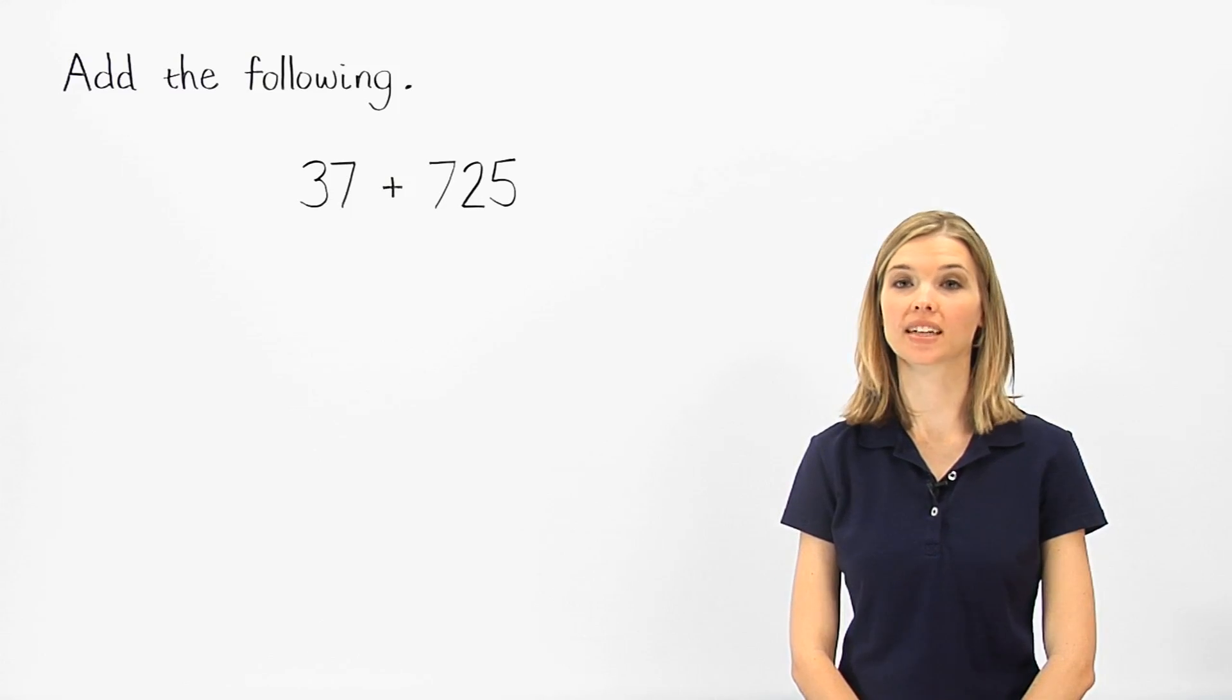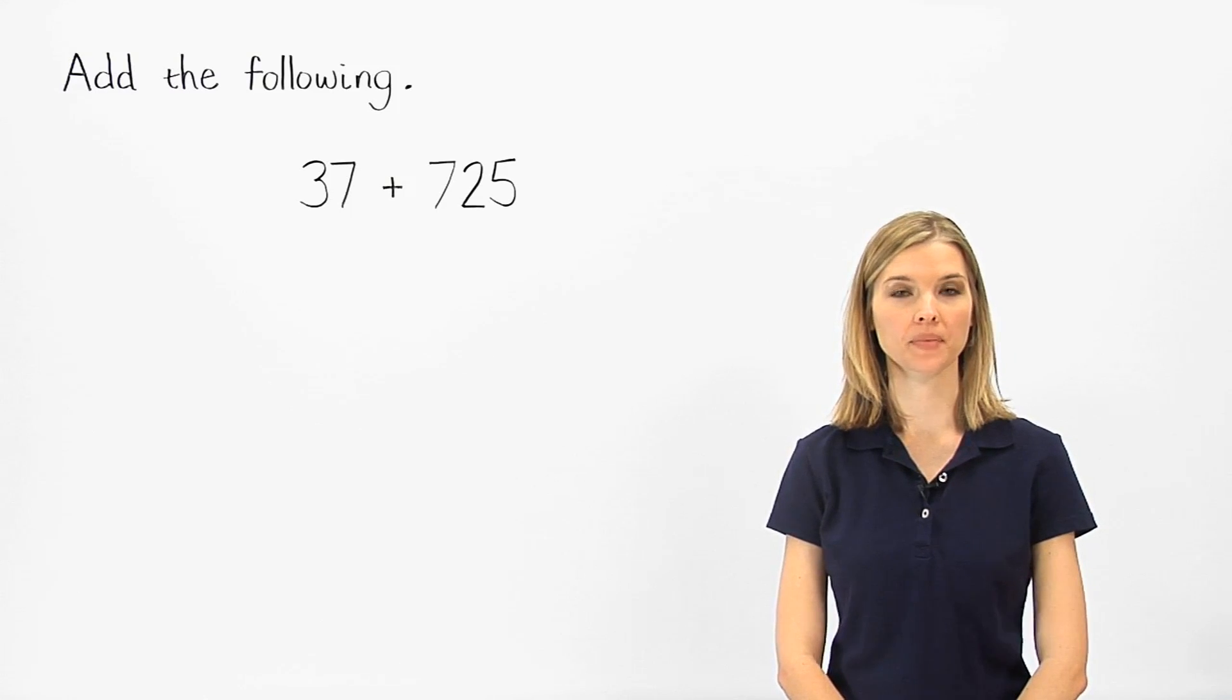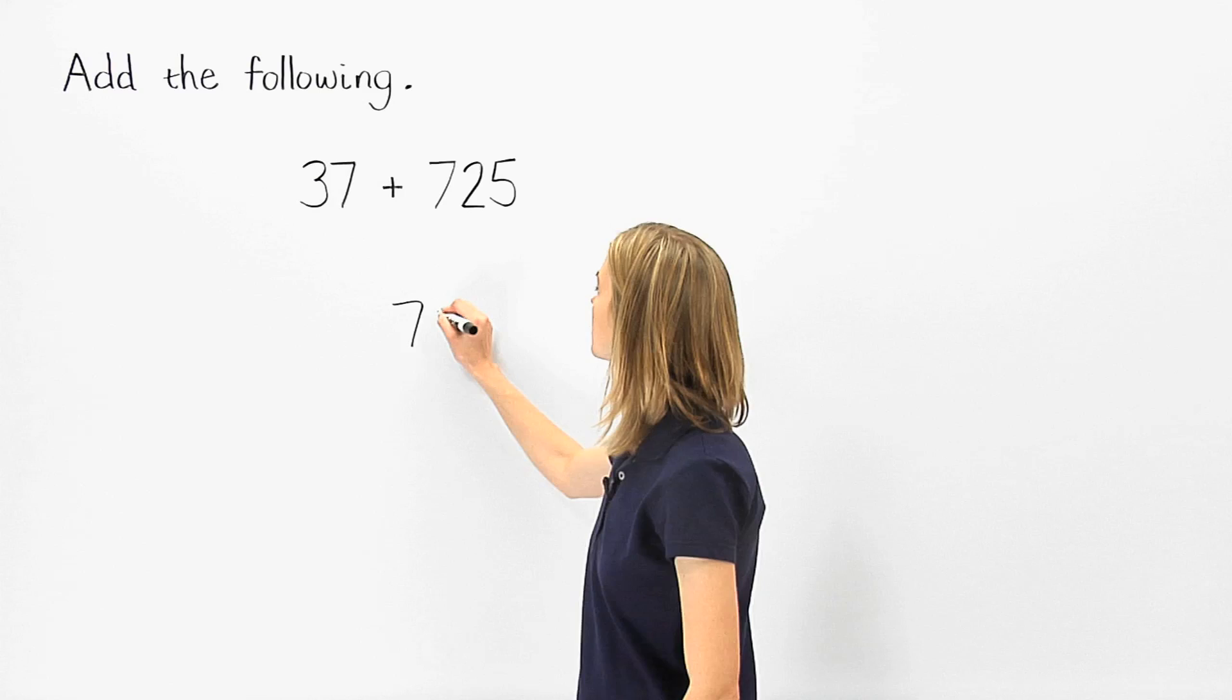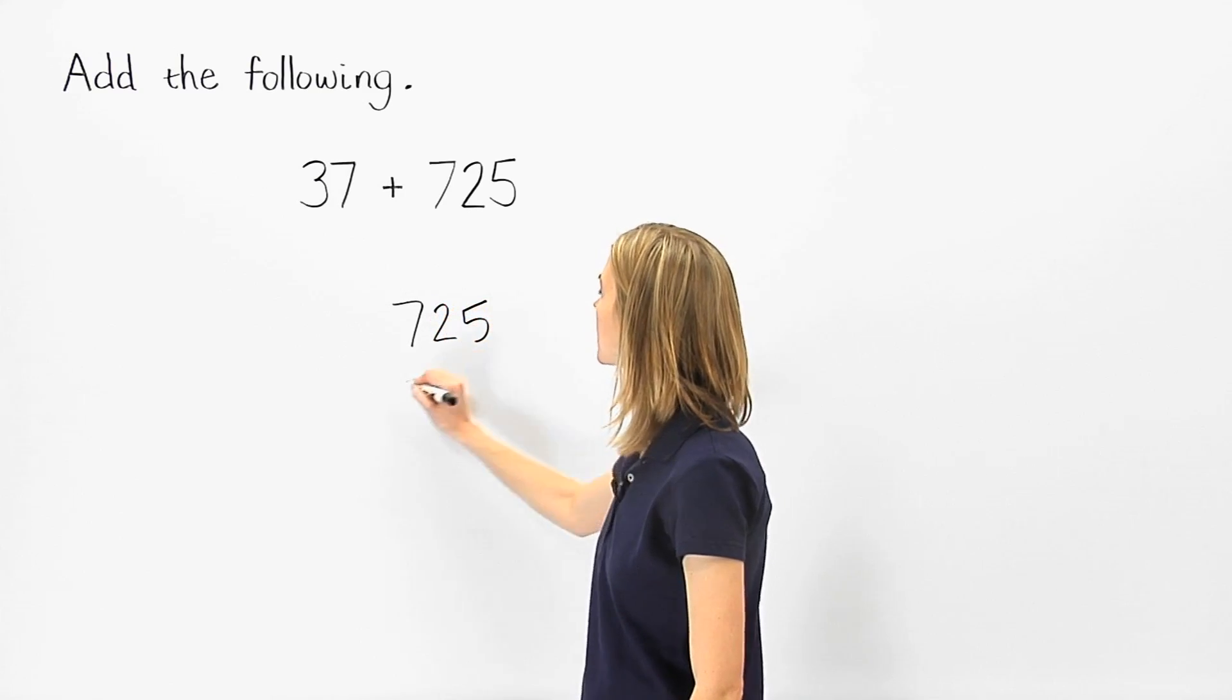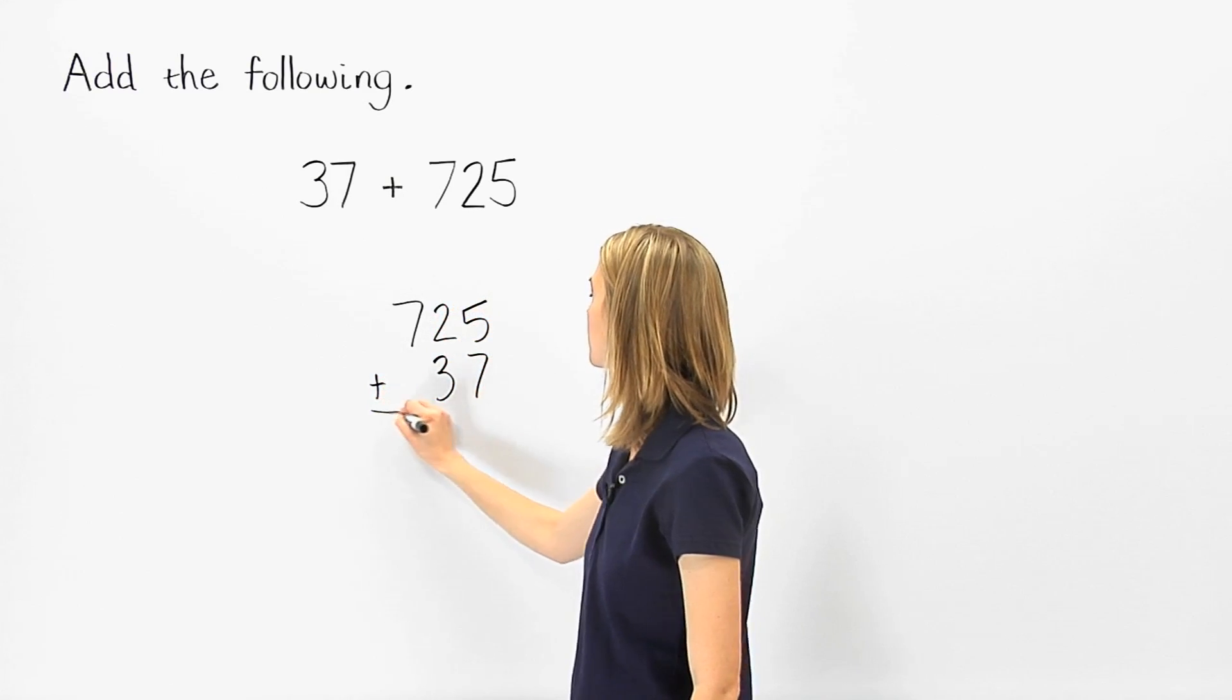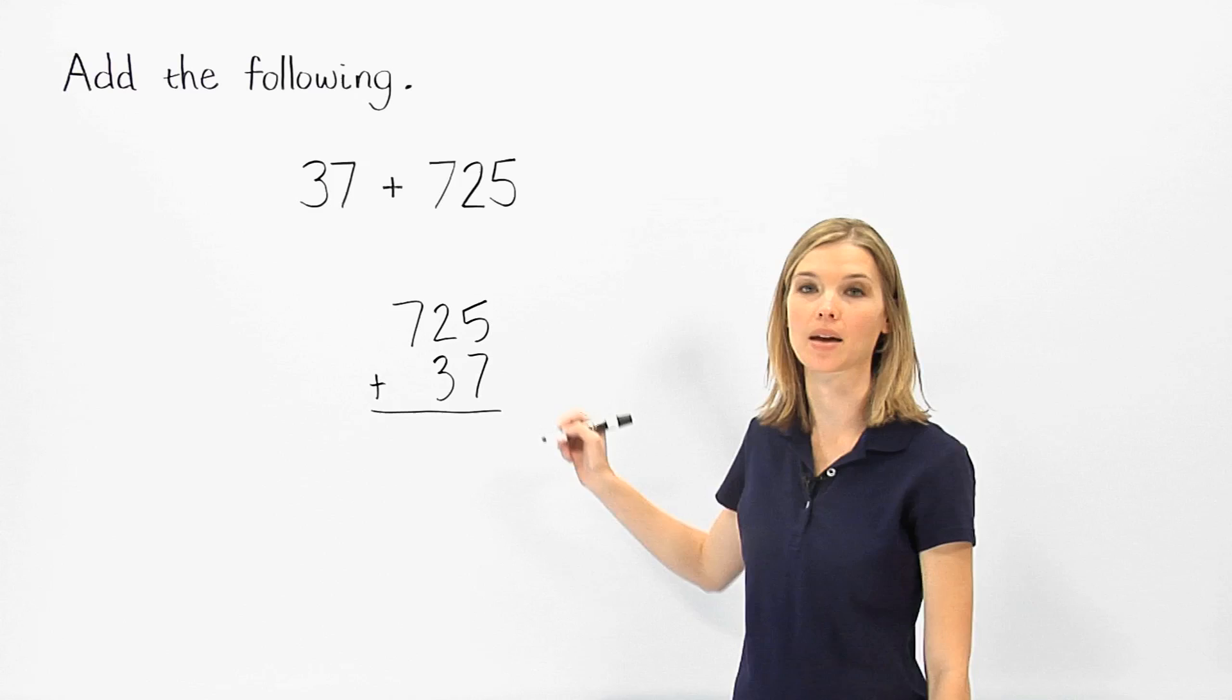When adding numbers that have different numbers of digits, I would put the larger number on top. So let's rewrite this problem as seven hundred twenty-five plus thirty-seven. And remember to line up the numbers so that the units digits are in the same column.